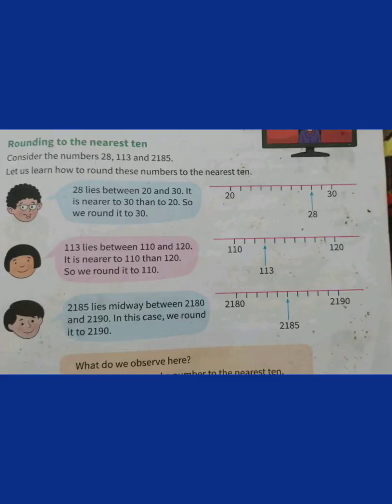The next topic is rounding to the nearest tens. Let us take an example of 28. We have two limits for 28, that is 20 and 30. So, is 28 nearer to 20 or 30? It is nearer to 30. So, 28 can be rounded up to 30.